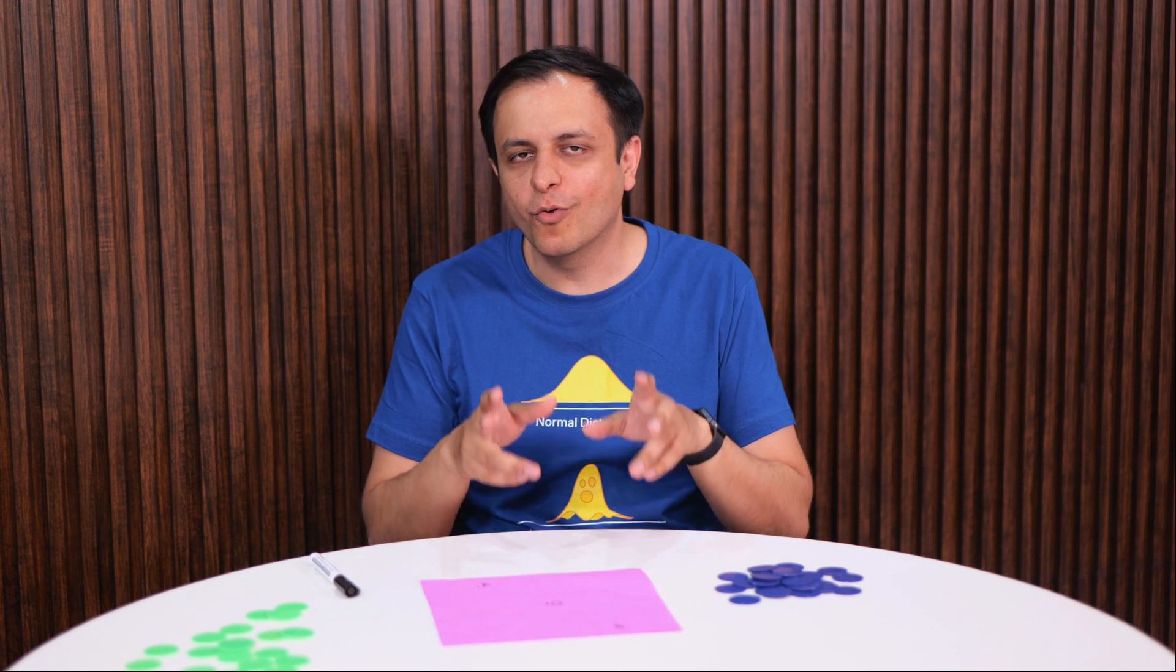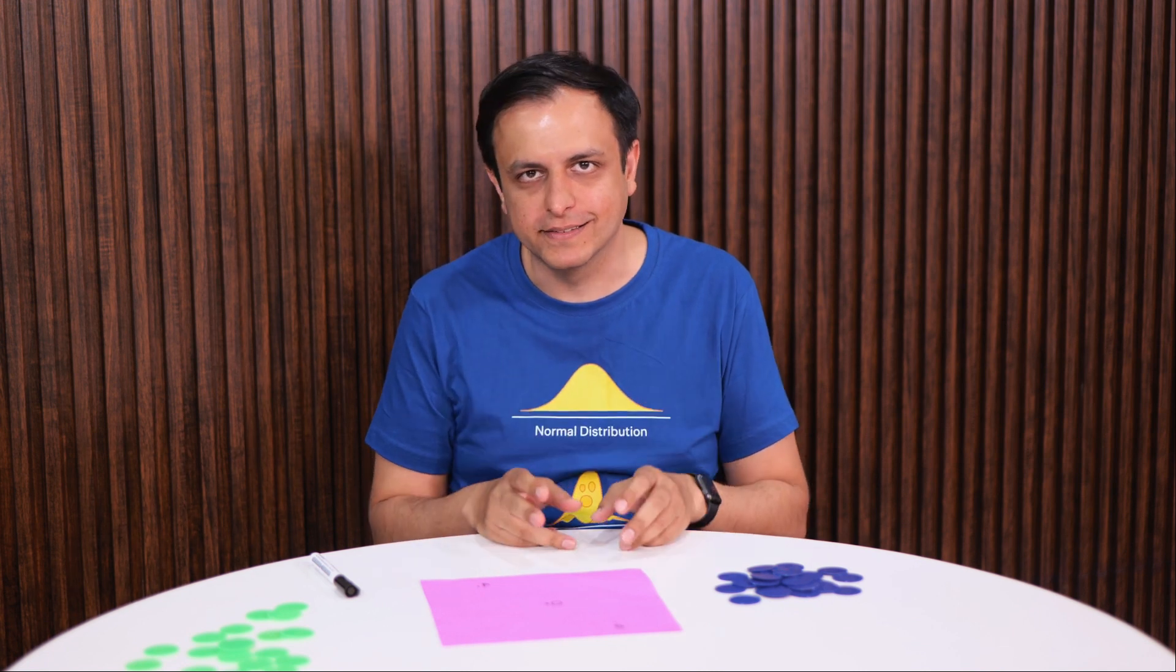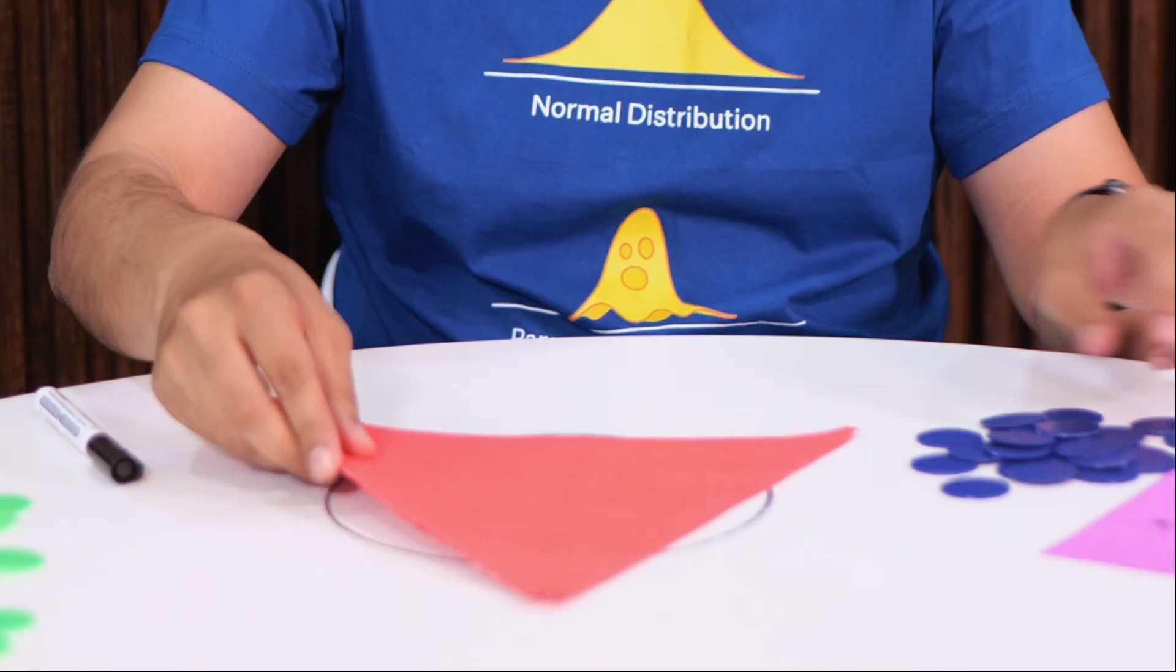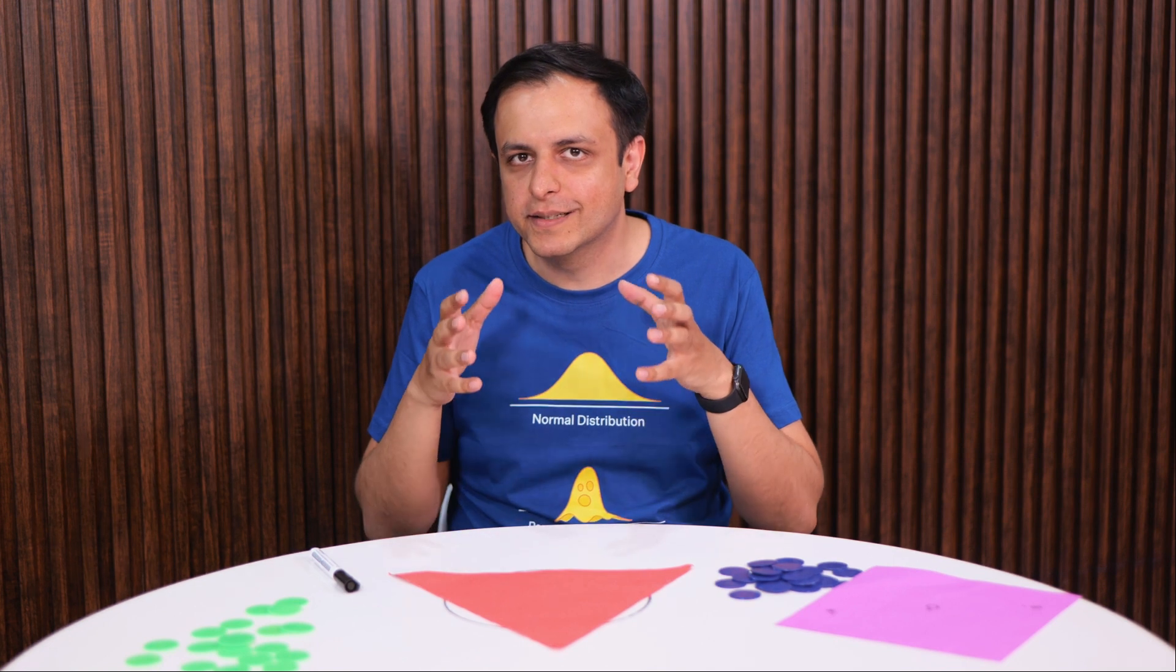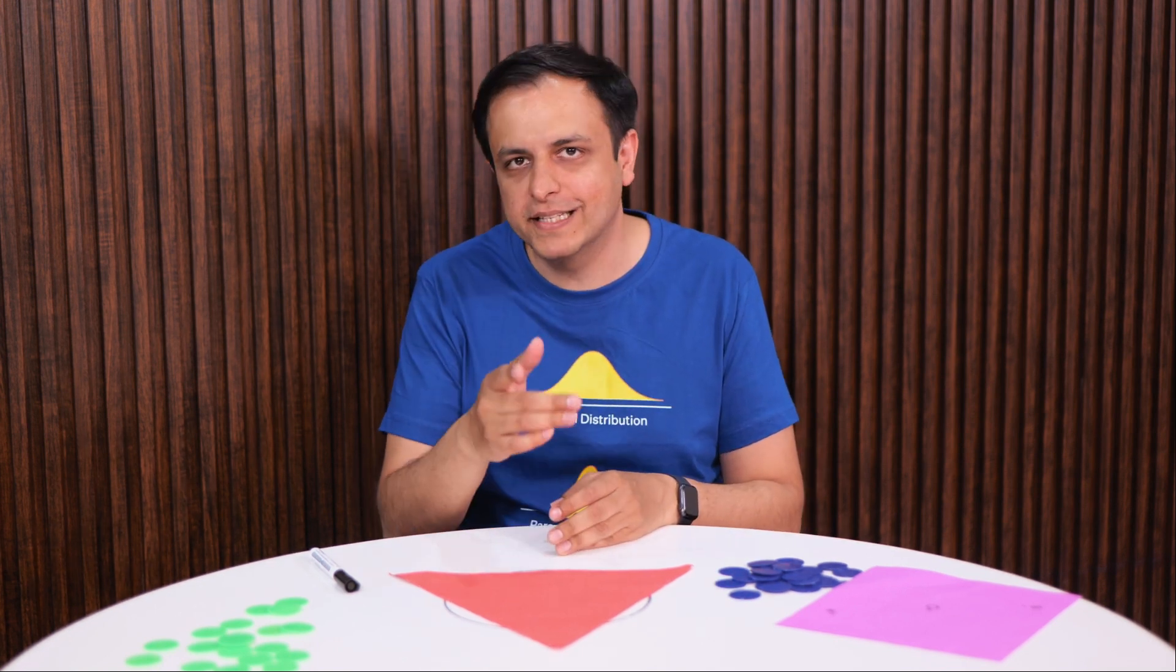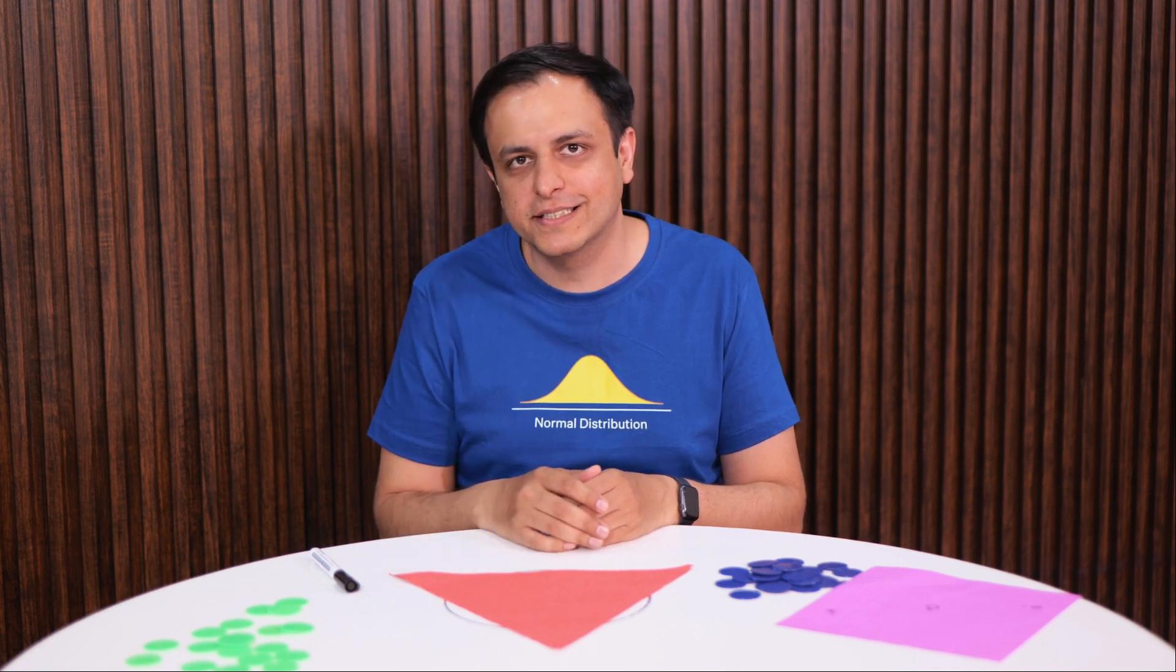And now I want to leave you all with a question. If instead of this square board I have this triangular board to play this game, do you think my winning strategy will still work in this case? Think about it, play this game, and let us know your thoughts in the comments.